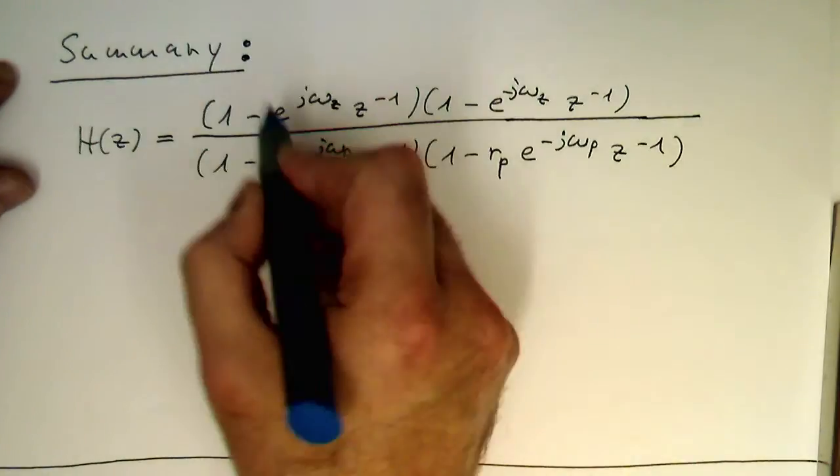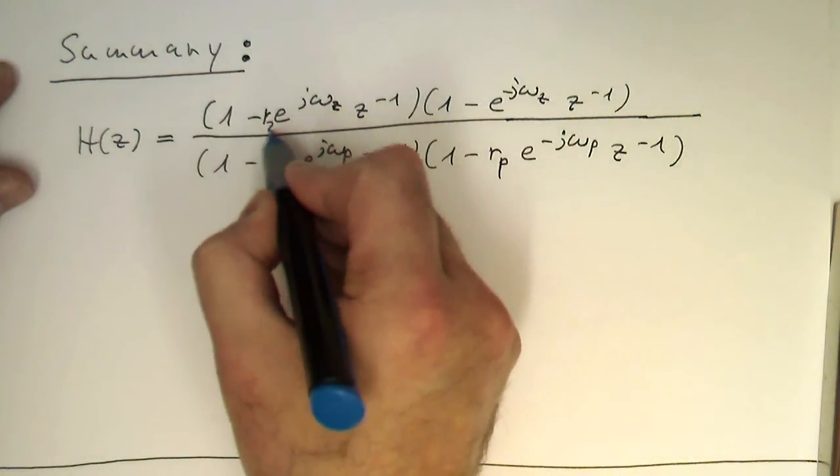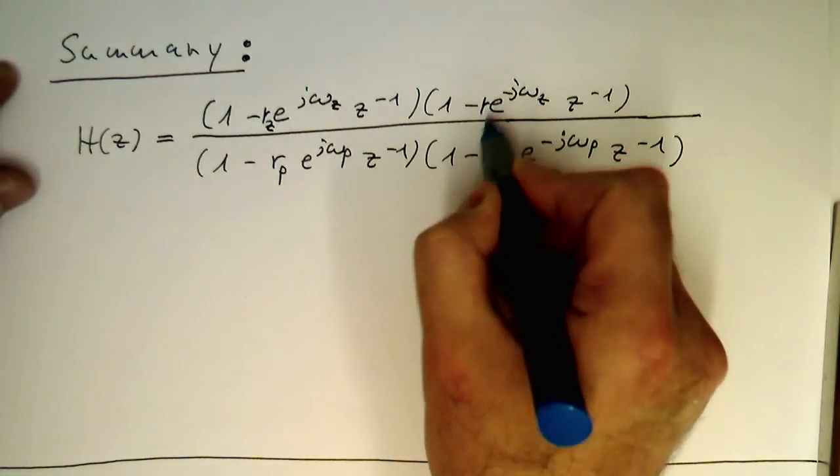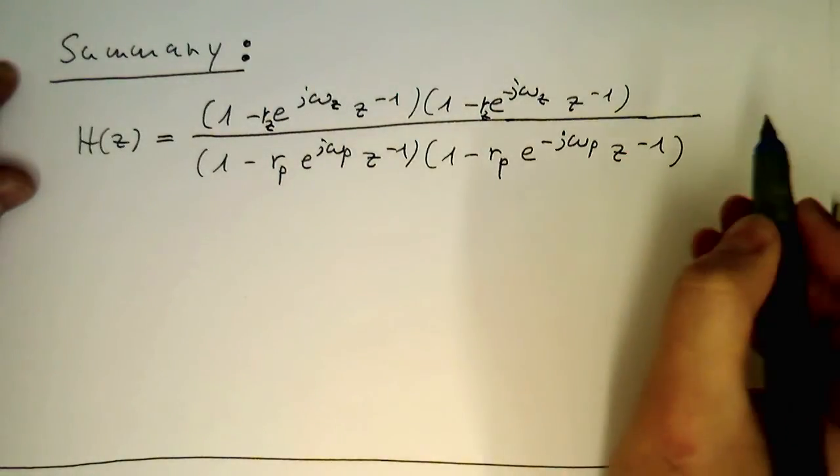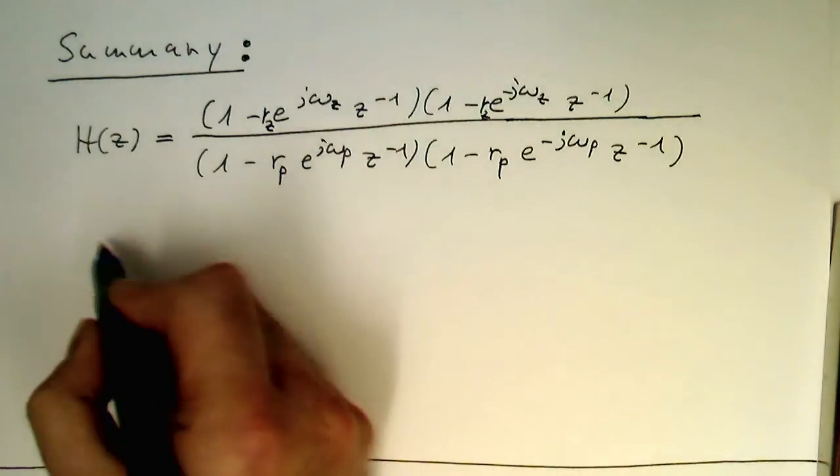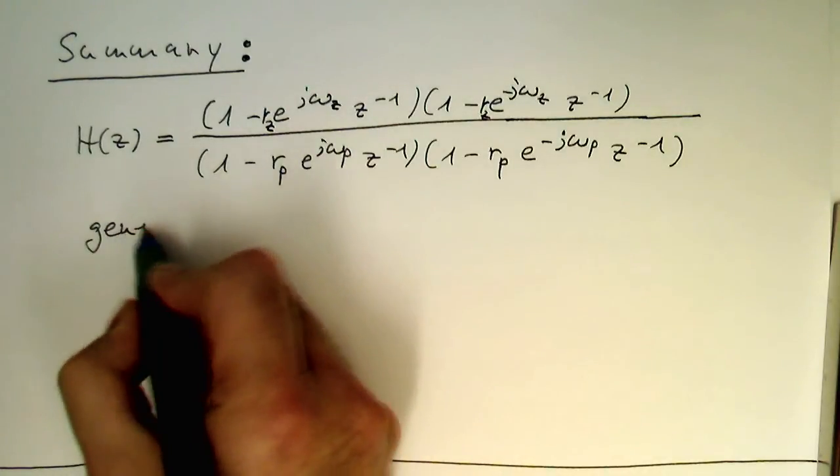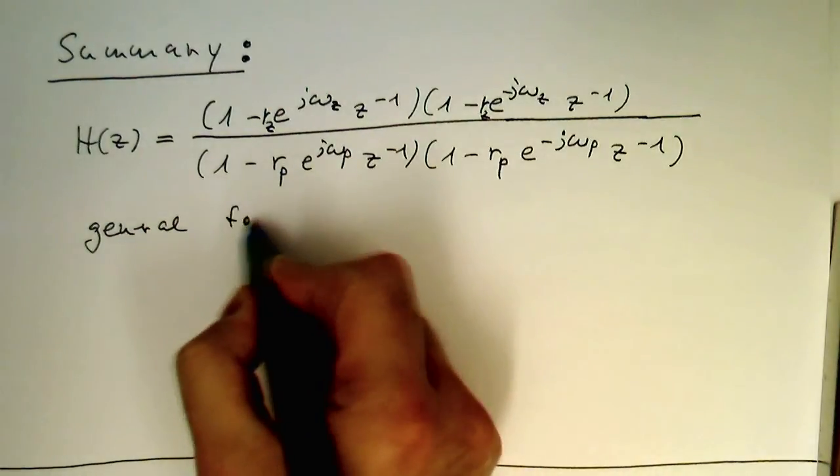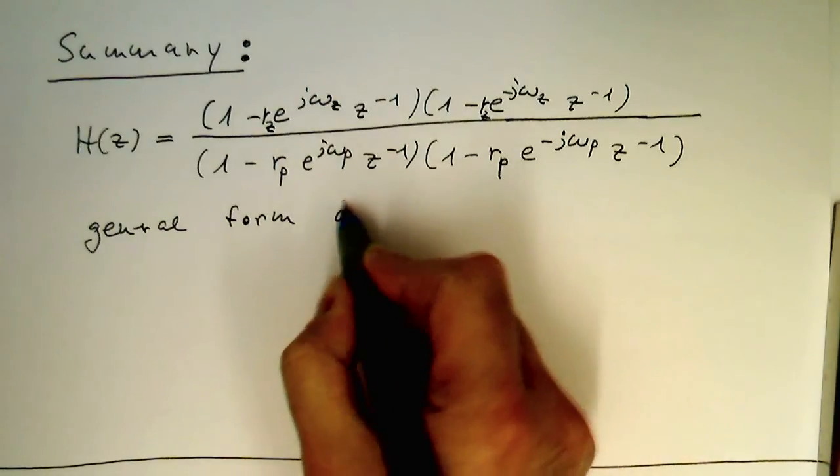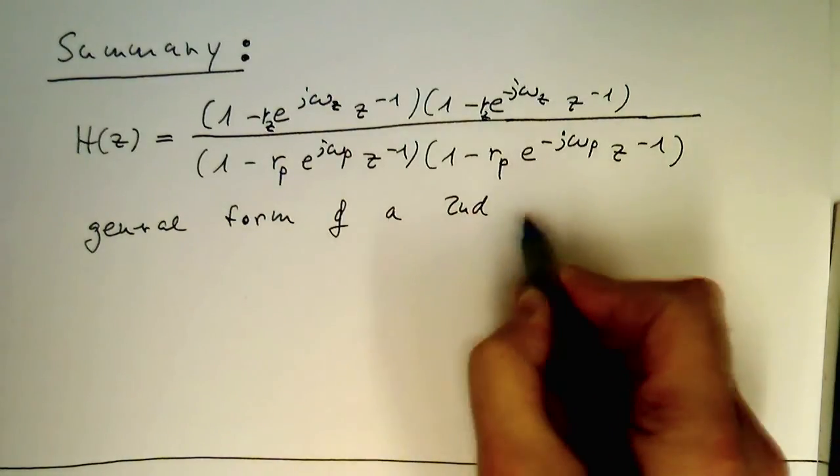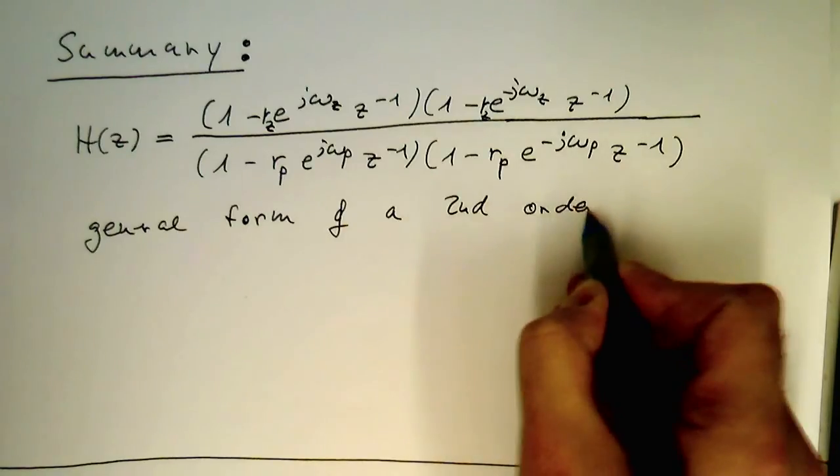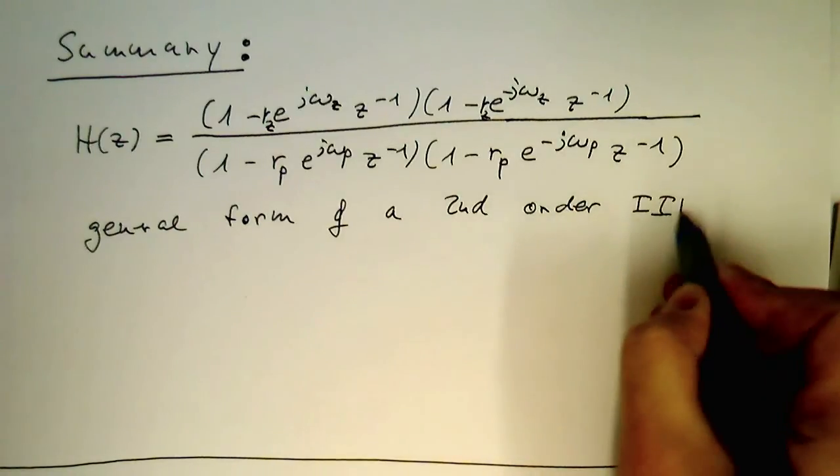And we could even expand this the way that we're saying, because we have an r_z here and we've got here an r_z. So this gives us a general form of a second-order IIR filter.